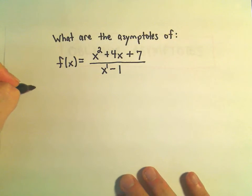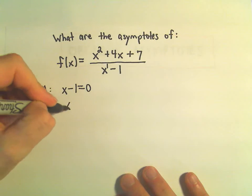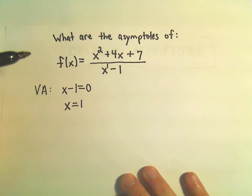First off, I'm going to find any vertical asymptotes. So vertical asymptotes, basically I just set the denominator equal to zero. That would give me, in this case, x equals one.